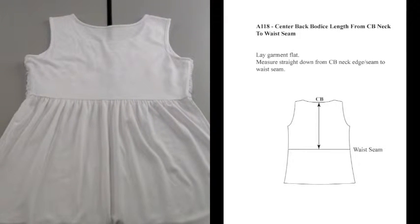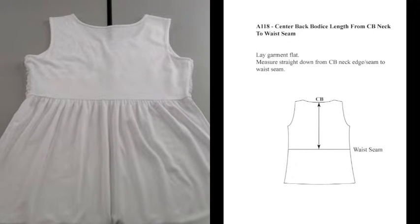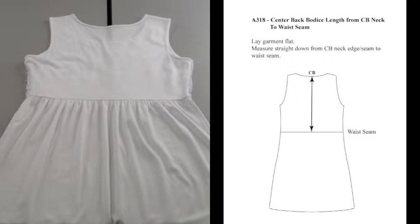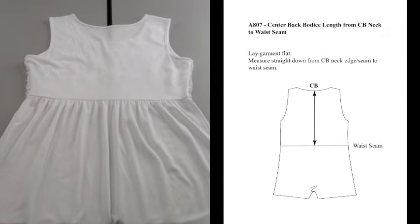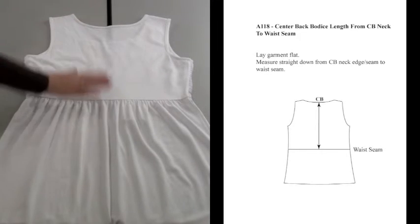A 118 — center back bodice length — is measured from center back neck to waist seam. This applies to knit and woven tops. This method of measurement also pertains to A 318 dresses, A 418 outerwear, and A 807 one-piece garments.